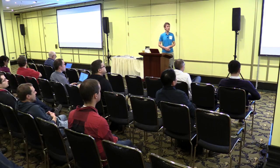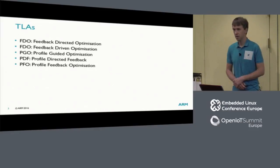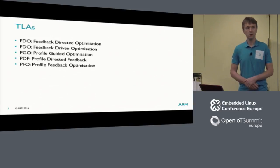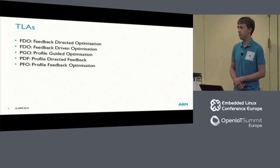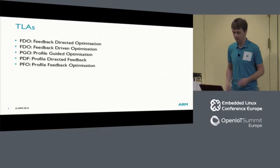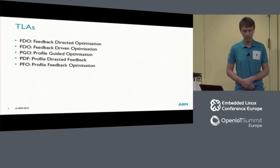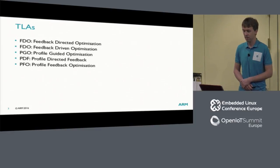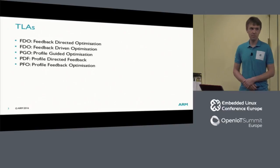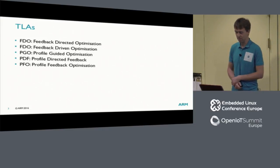Let's start with terminology. Three-letter acronyms: I've already used the FDO one, which can be resolved as feedback-directed optimization or feedback-driven optimization. It is also widely known as PGO, standing for profile-guided optimization. There is a standing joke that anything invented in the 21st century around computer science has already been done by IBM in the 70s. They did do this in the 70s within mainframe, and they called it PDF, Profile-Directed Feedback. In SUN's documentation you'll find PFO, Profile-Feedback Optimization. It's all the same stuff.